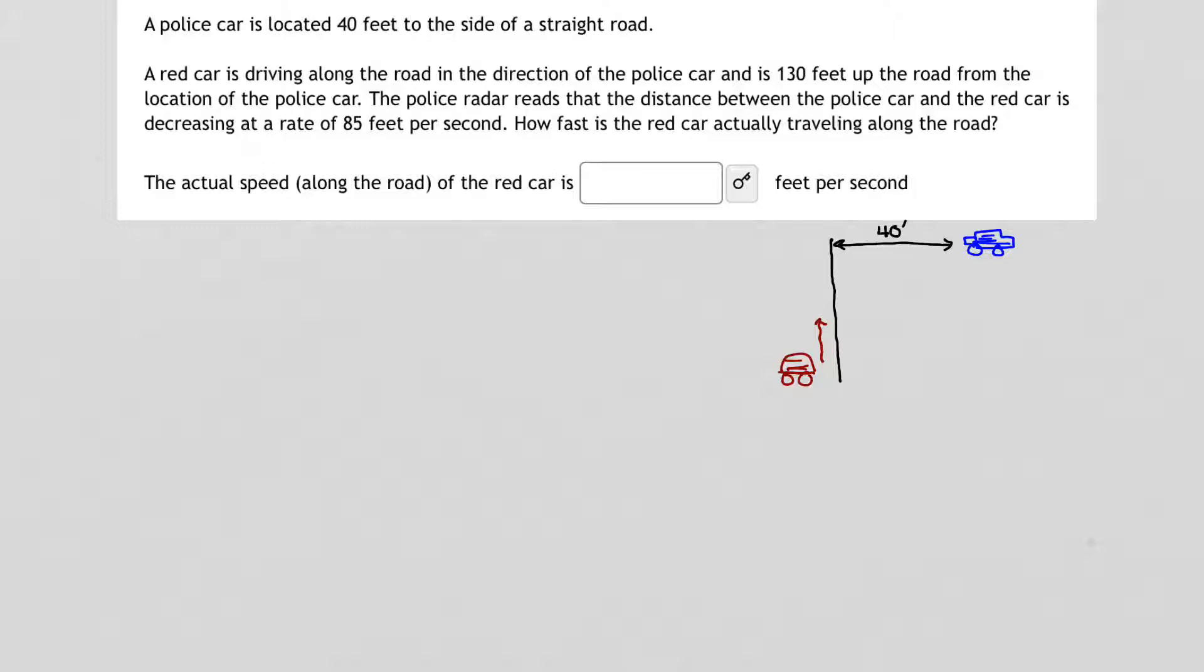The next step says that the police reads that the distance between the police car and the red car is decreasing. So the police has this radar gun and he's tracking the red car. And so the fastest way to get to that red car is to do a straight line distance radar to the red car. Now he's tracking this, but as the red car moves, we'll see that this actually changes. This distance is changing as that car moves along the road. Because that distance is changing, I am going to label that with a variable. I'm going to call that Z.